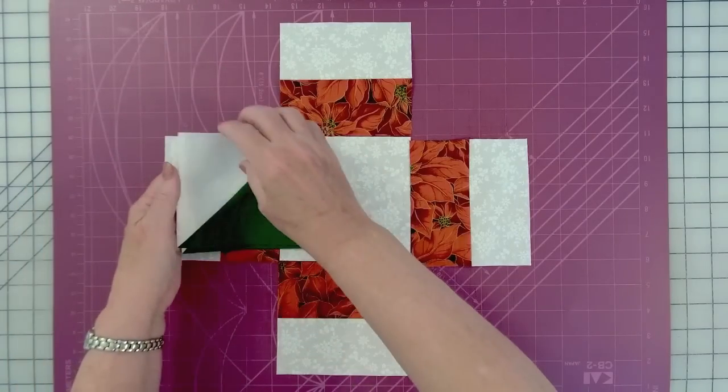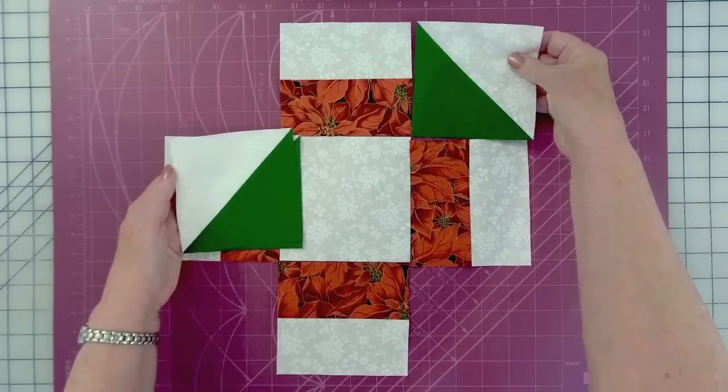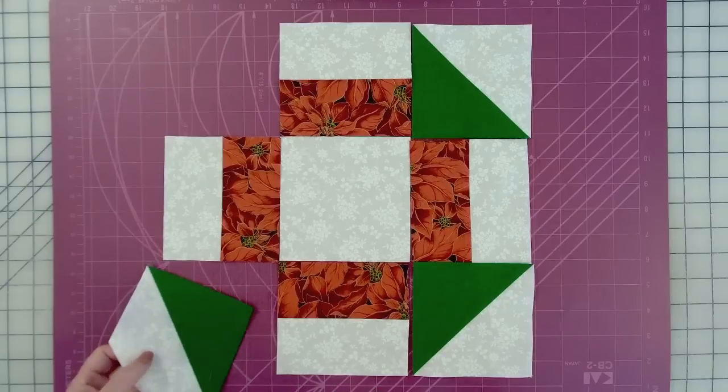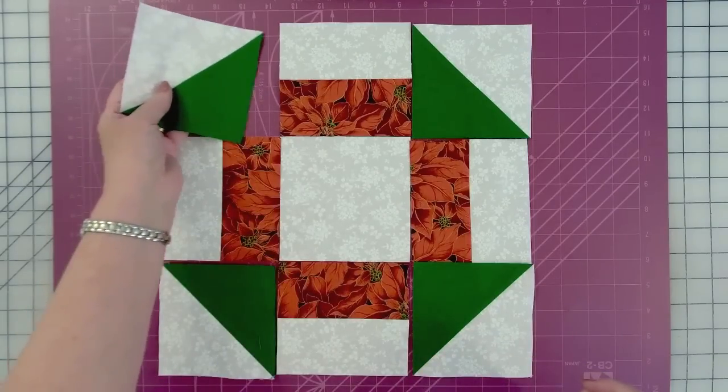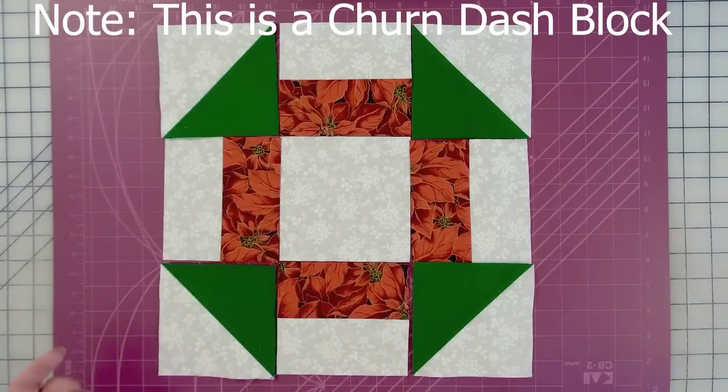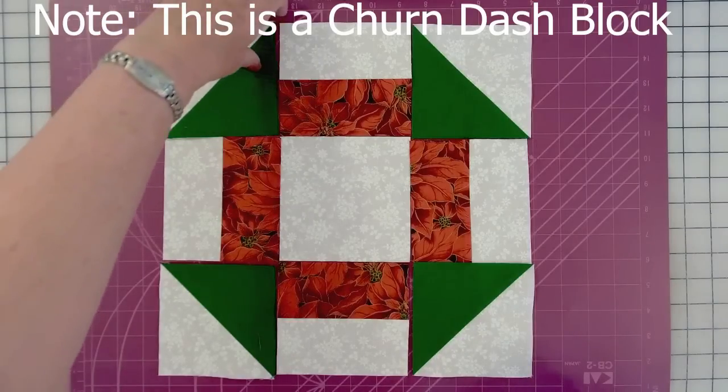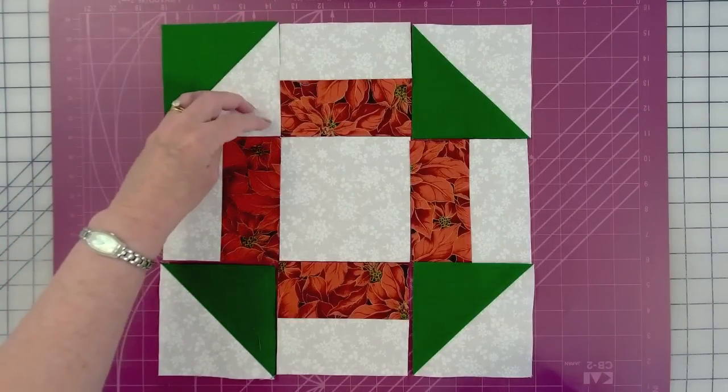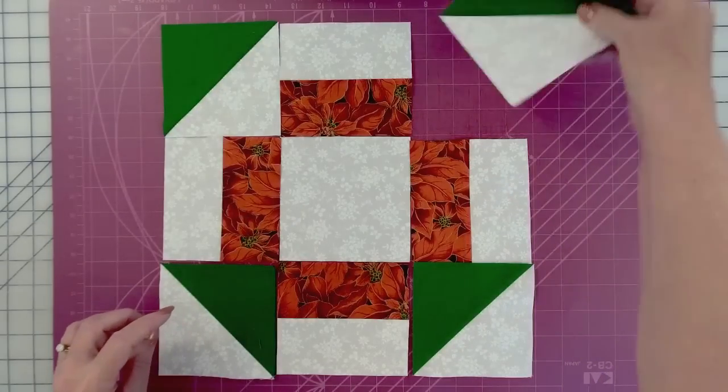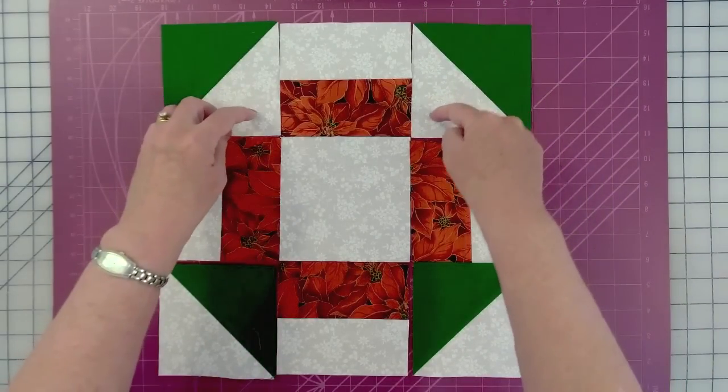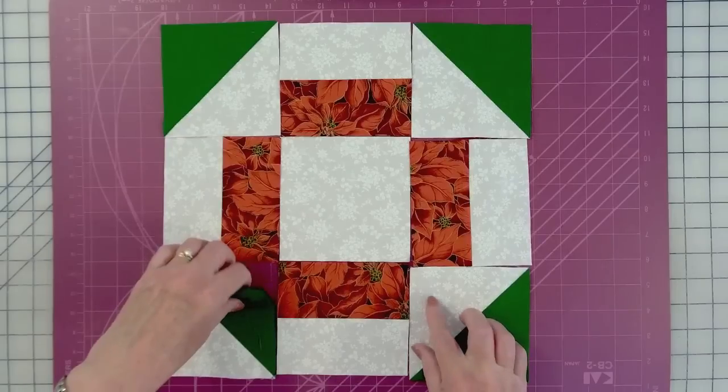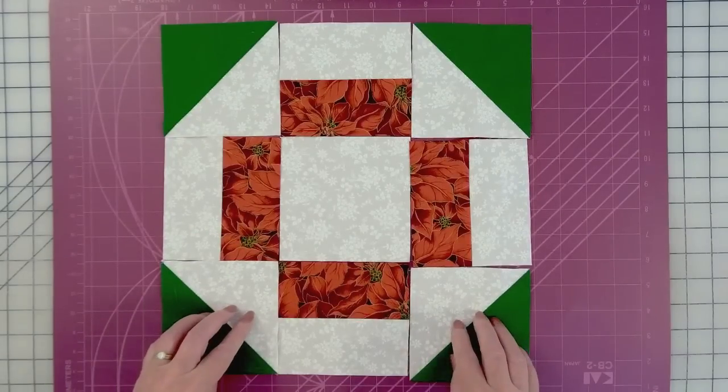Now, as a quick little side note, if we put these half square triangles in like this, this would be a churn dash. And let me know if you want to see me make some disappearing churn dash quilts. But instead, to make the Grecian square, we're going to turn this around. So the white is to the inside and the dark is to the outside.